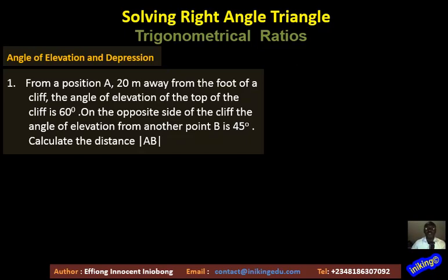We are still on Angles of Elevation and Depression. This is the last video clip on solving right angle triangles. We are using trigonometrical ratios. On the screen we have a question: from a position A, 20 meters away from the foot of a cliff, the angle of elevation of the top of the cliff is 60 degrees. On the opposite side of the cliff, the angle of elevation from another point B is 45 degrees. We are asked to calculate the distance between these two points A and B.